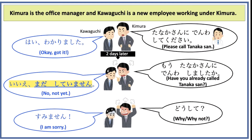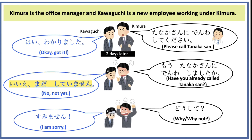That is why Kawaguchi's answer, Iie, mata shite imasen, is the more appropriate answer to his boss's question. Please also note that the te form of the verb is used here, to go with mata and imasen, to describe that the activity has not been done yet.